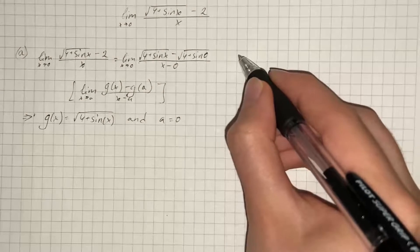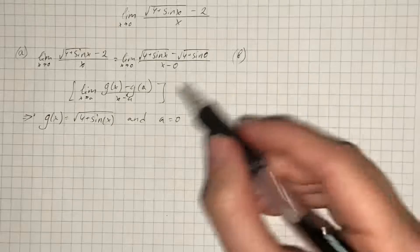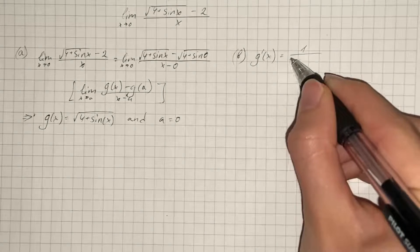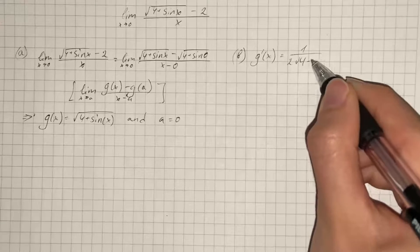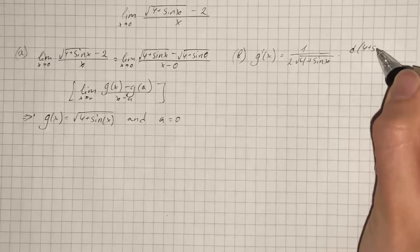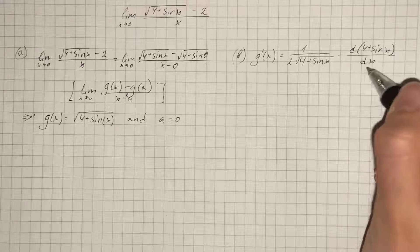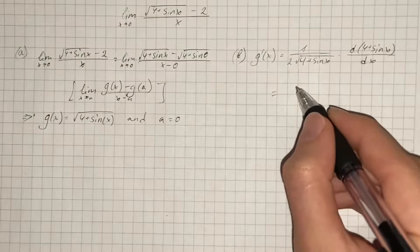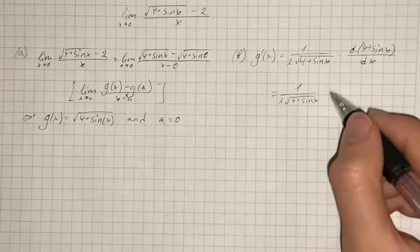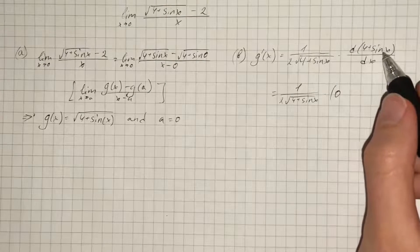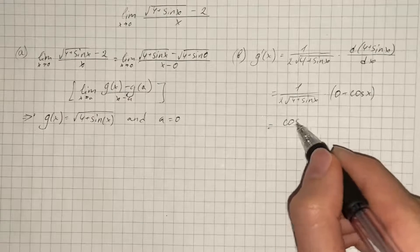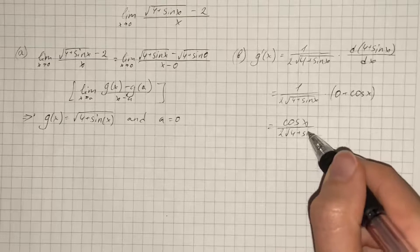Now we differentiate g(x) with respect to x. The derivative of g(x) equals 1 over 2 times square root of (4 plus sine of x), and here we use the chain rule, multiplying by the derivative of (4 plus sine of x) with respect to x. The derivative of the constant 4 is 0 and the derivative of sine of x is cosine of x, so our derivative is cosine of x over 2 times square root of (4 plus sine of x).